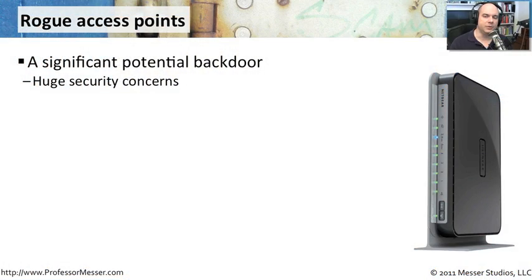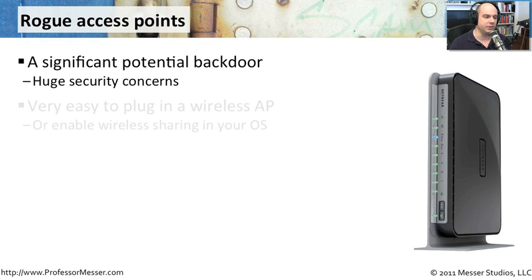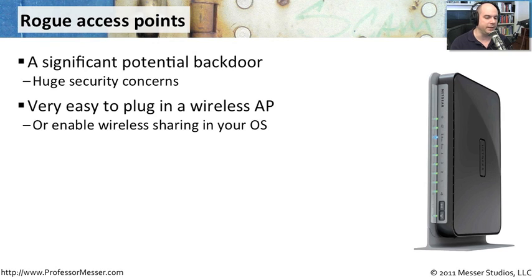A rogue access point is an access point that's been added to your network without your knowledge — you have no idea it's there. This obviously creates a very significant backdoor. If you don't know an access point is there, you aren't managing it, you don't know if any security has been configured on it, and you have no idea who might be connecting to your network through that wireless connection. There are really huge security concerns associated with a rogue access point.